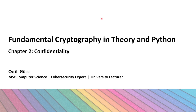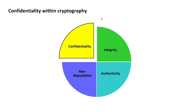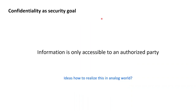We have reached chapter 2 of our course about fundamental cryptography in theory and Python — the chapter about the classic cryptography security goal: confidentiality. As a recap, the four classic security goals of cryptography are confidentiality, integrity, authenticity, and non-repudiation. Confidentiality as a security goal demands that information in a system is only accessible to authorized parties.